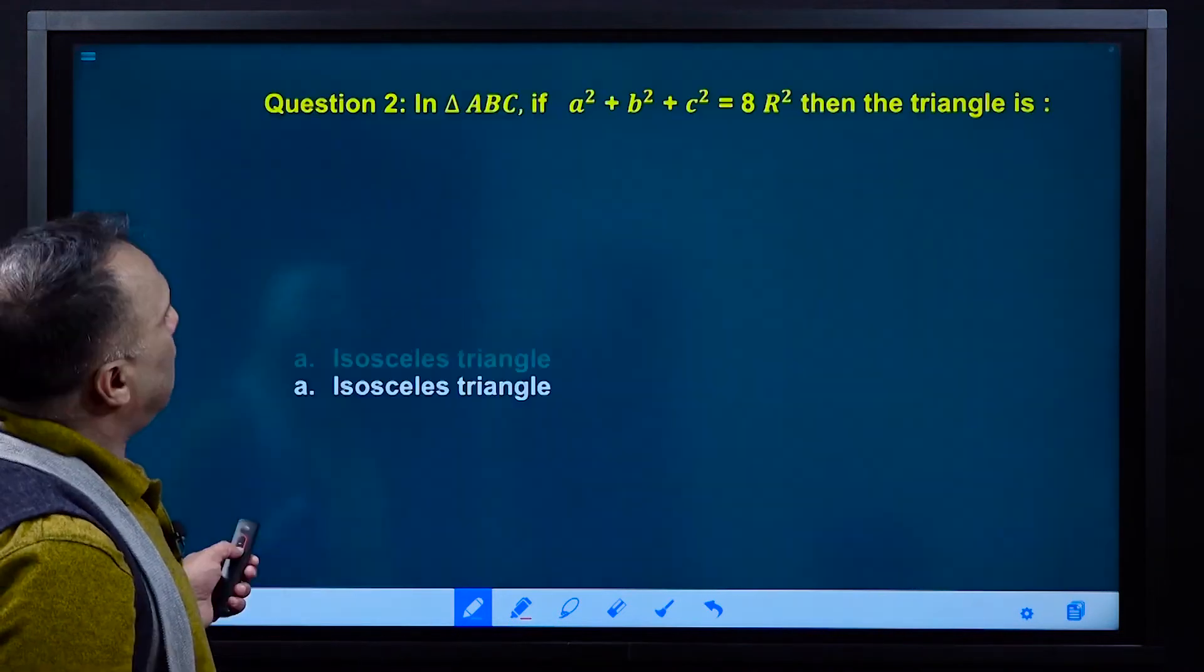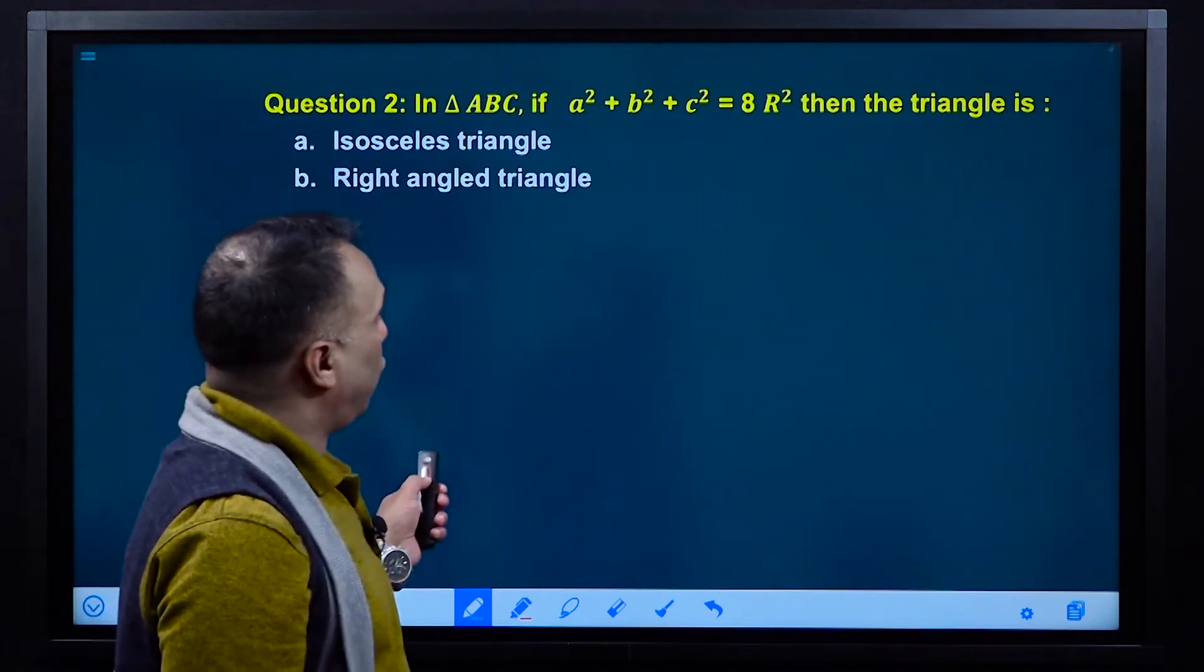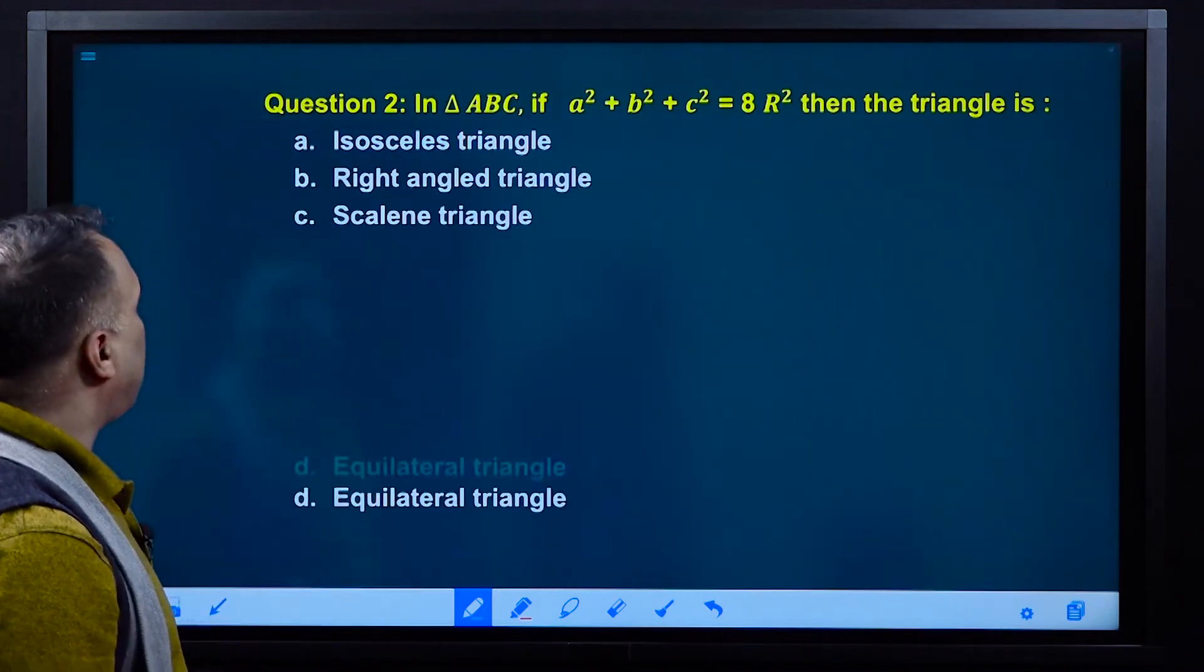Next question. In triangle ABC, if a² + b² + c² equals 8R², then the triangle is?